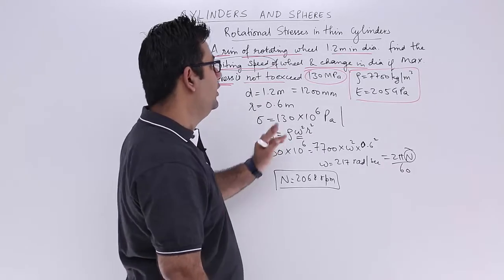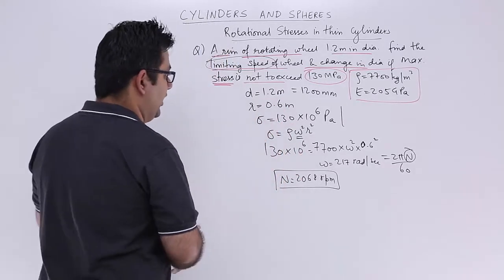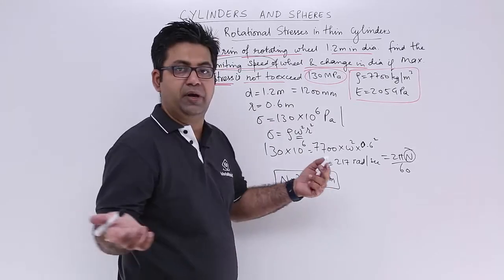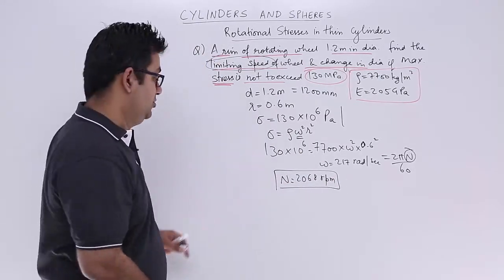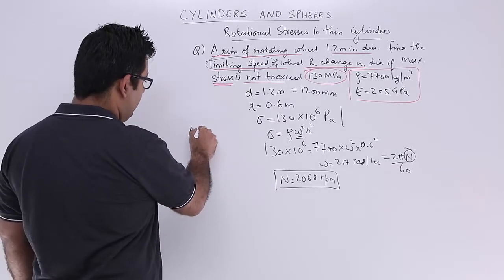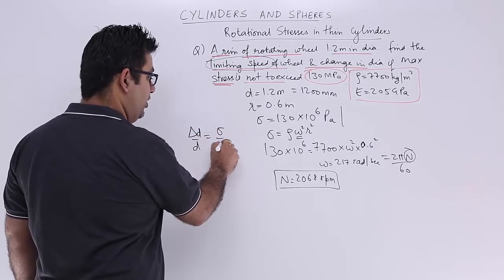The second part is to find the change in diameter. The change in diameter is basically your hoop strain. So the strain corresponding to hoop stress is ΔD/D = σ/E.